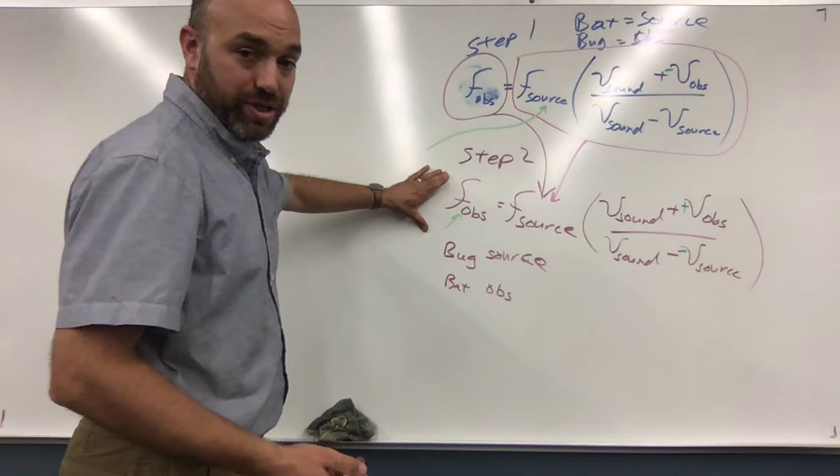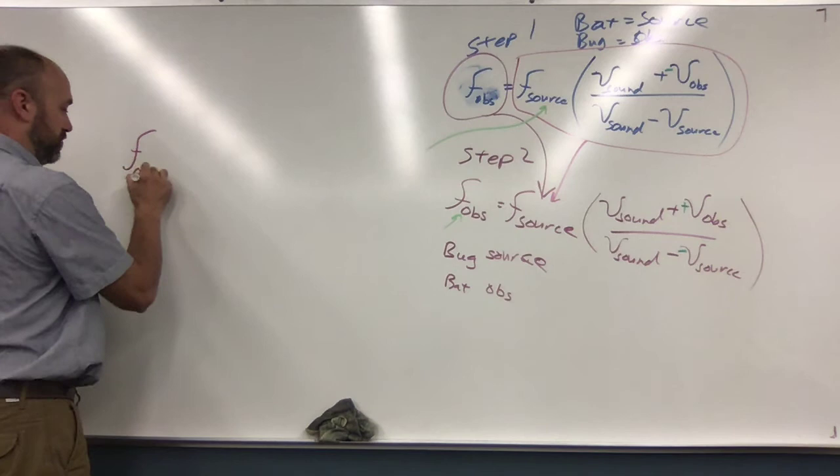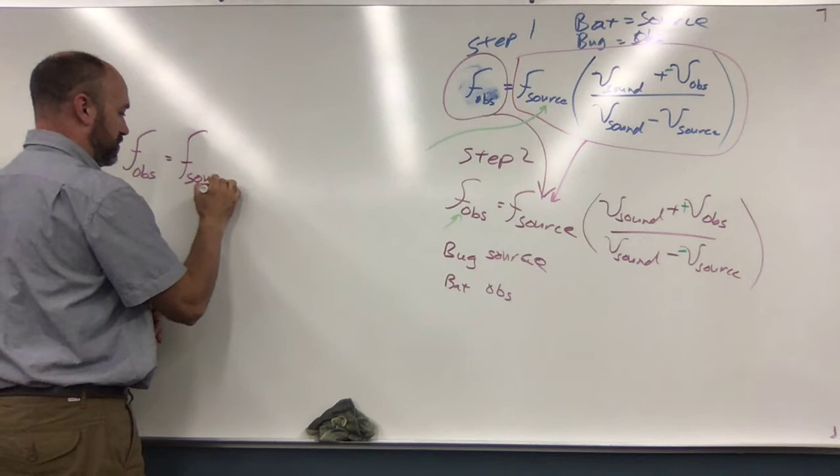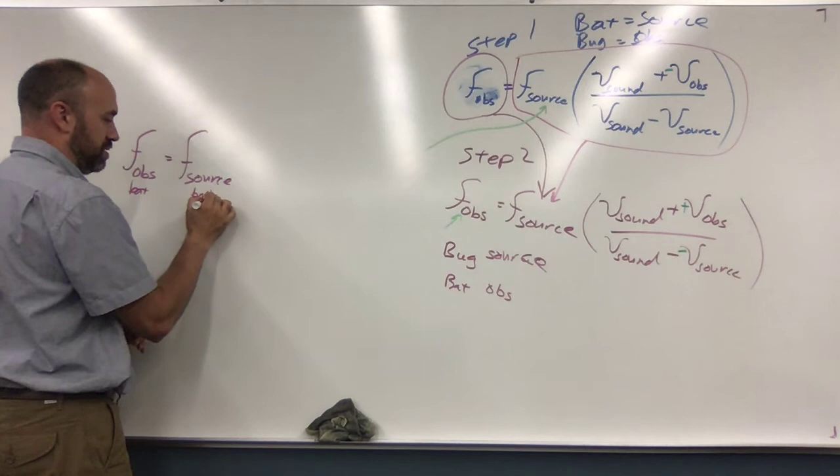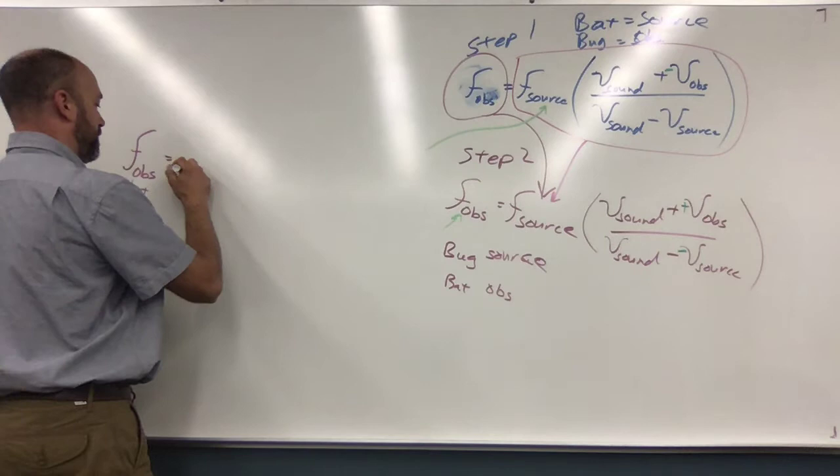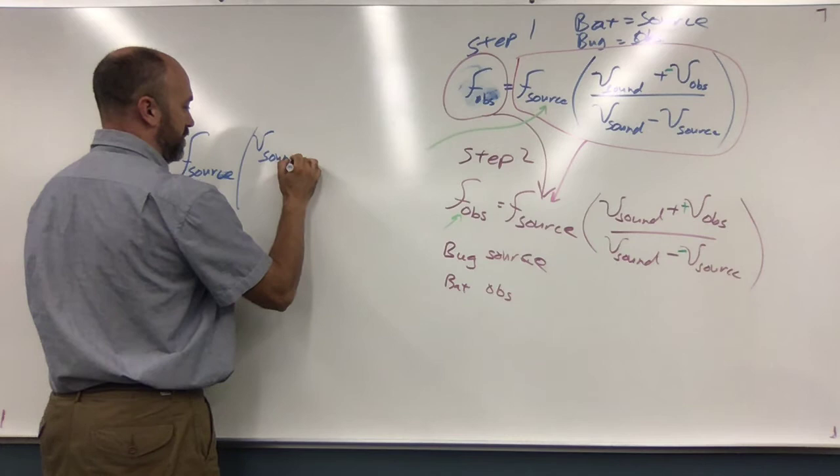So what I'm gonna do is I'm gonna write out this purple equation here. Instead of writing F source, I'm gonna write all this. So I'm gonna write the frequency observed by the bat is equal to—now instead of writing this, I'm gonna write this whole big thing. F source, bat, times, and maybe I should write this in blue. V sound plus a negative V bug.